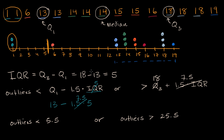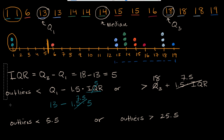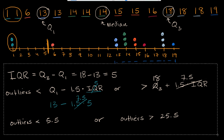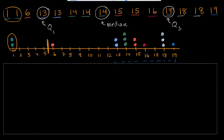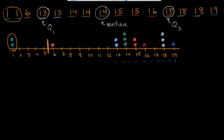Another thing to think about is drawing box and whiskers plots based on Q1, our median, and our range. You can do it either taking into consideration your outliers or not. So there are a couple of ways we can do it. Let me actually draw a box and whiskers plot.